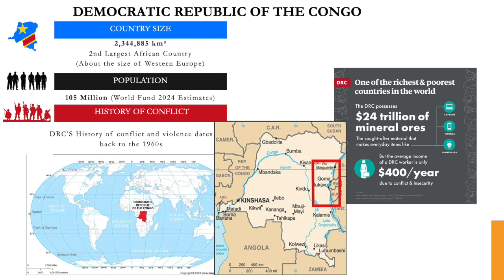DRC is the second largest country in Africa after Algeria, and it has a population of 105 million. One thing that is very interesting is the geographical location of this country in the context of the African map — the centrality of this country, its size, and the distance from Kinshasa to Goma, where the focus of the challenges we are facing right now lies.